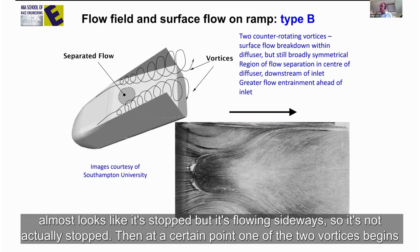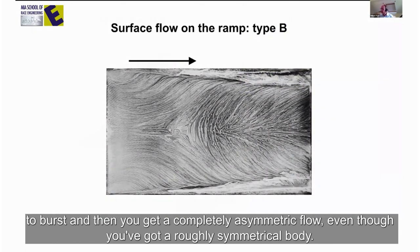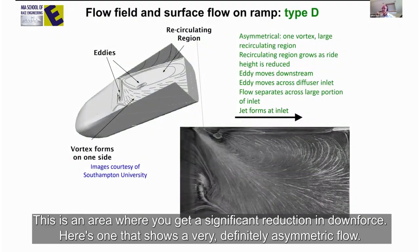And then at a certain point, one of the two vortices begins to burst and then you get a completely asymmetric flow, even though you've got a roughly symmetrical body. And this is an area where you get a significant reduction in downforce. And here's one that shows very definitely asymmetric flow.